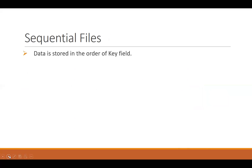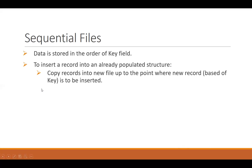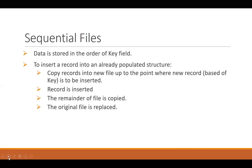In a sequential file, data is stored in order of a key field. For example, if we are entering student data and the student ID is an integer key, we use that student ID to arrange the records in ascending or descending order. If we want to insert a new record into a sequentially populated file, we copy the records into a temporary file up to the point where the new record must be inserted based on the key, insert the record at its correct position, copy the remainder, and then replace the original file with the new version.